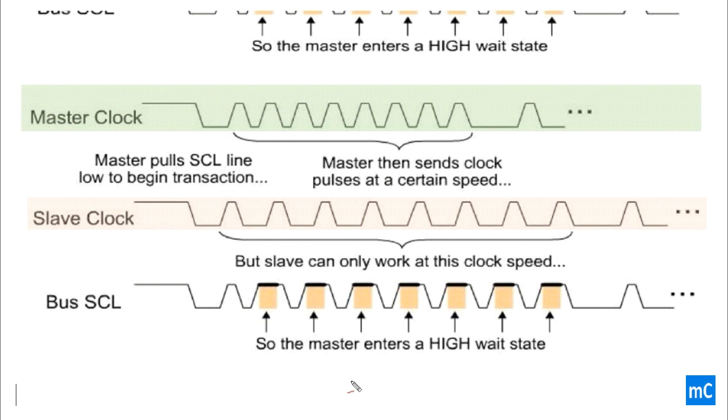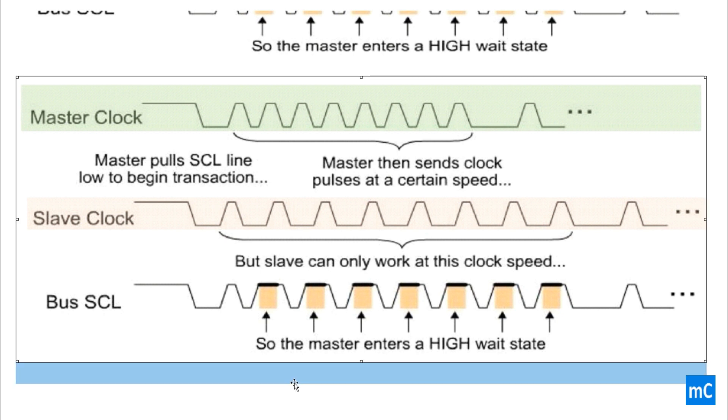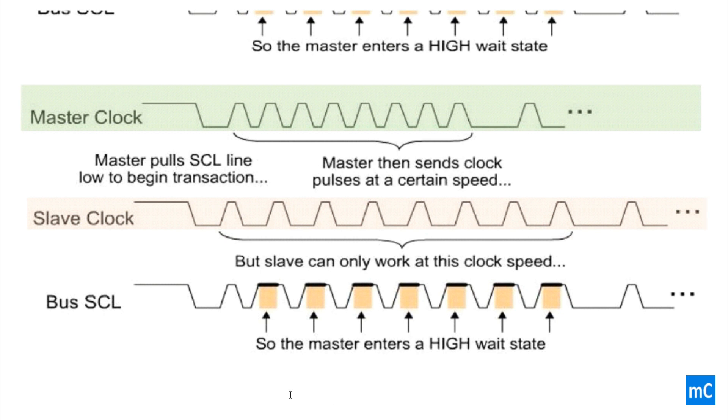So, as I said earlier, master alone cannot pull the line high or low. So, once the slave is pulling the line low, even if the master pulls the line high, the actual serial clock will not go high.